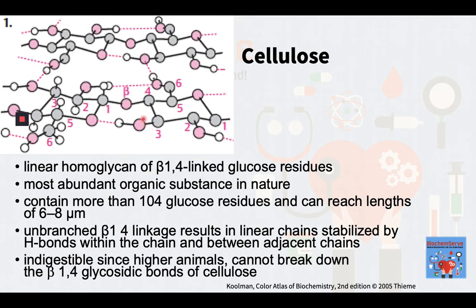Cellulose, a linear homoglycan of beta-1,4-linked glucose residues, is the most abundant organic substance in nature. Almost half of the total biomass consists of cellulose. Some 40 to 50% of plant cell walls are formed by cellulose. Cellulose molecules can contain more than 10⁴ glucose residues and can reach lengths of 6 to 8 micrometers. Naturally occurring cellulose is extremely mechanically stable and is highly resistant to chemical and enzymatic hydrolysis. These properties are due to the conformation of the molecules and their supramolecular organization. The unbranched beta-1,4 linkage results in linear chains that are stabilized by hydrogen bonds within the chain and between neighboring chains.